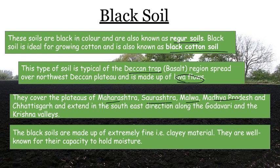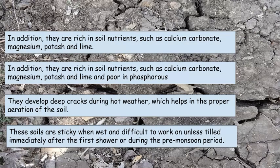Black soil is also found in the Godavari and Krishna valleys. It is made up of fine clay particles and can hold moisture, making it ideal for cotton. It is rich in soil nutrients such as calcium carbonate, magnesium, and potassium, but it is poor in phosphorus. It develops cracks during hot weather which helps in proper aeration.